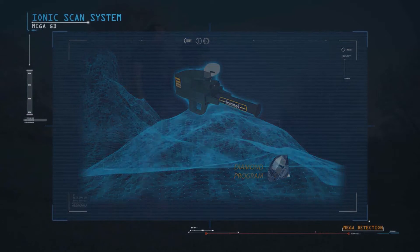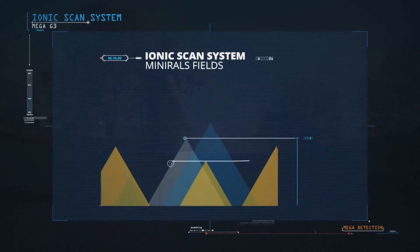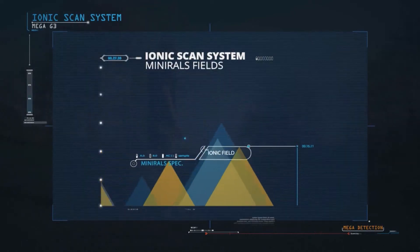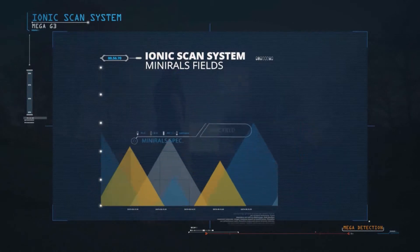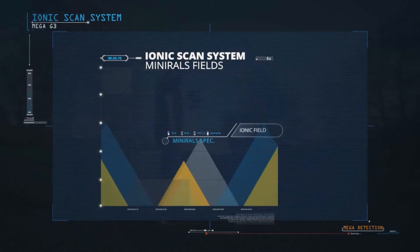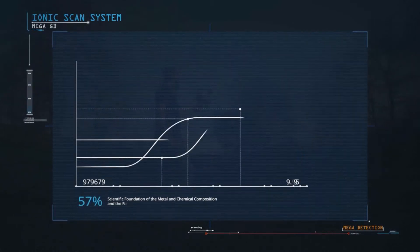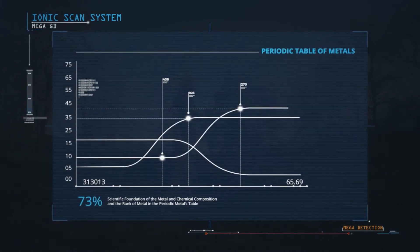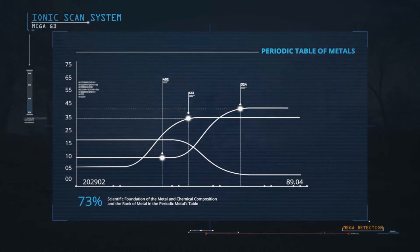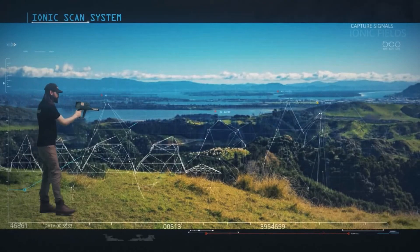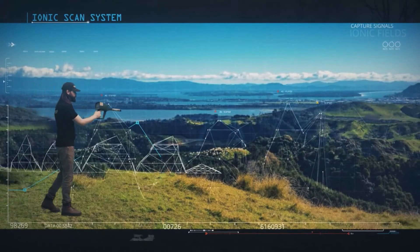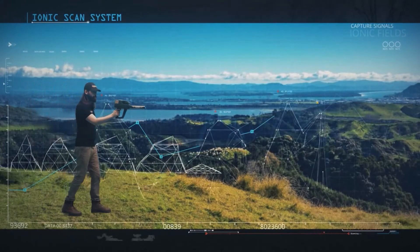This system is based on the scientific foundations of the properties of the metal and its chemical composition and the rank of metal in the periodic table of metals. The ionic scan system enables the user to capture signals from these fields from long distances and alert the user when approaching them.